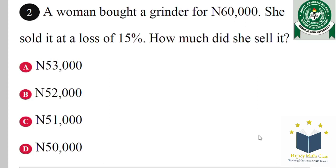A woman bought a grinder for 60,000 Naira and sold it at a loss of 15%. How much did she sell it for? The first thing we identify is that our cost price is 60,000 Naira.